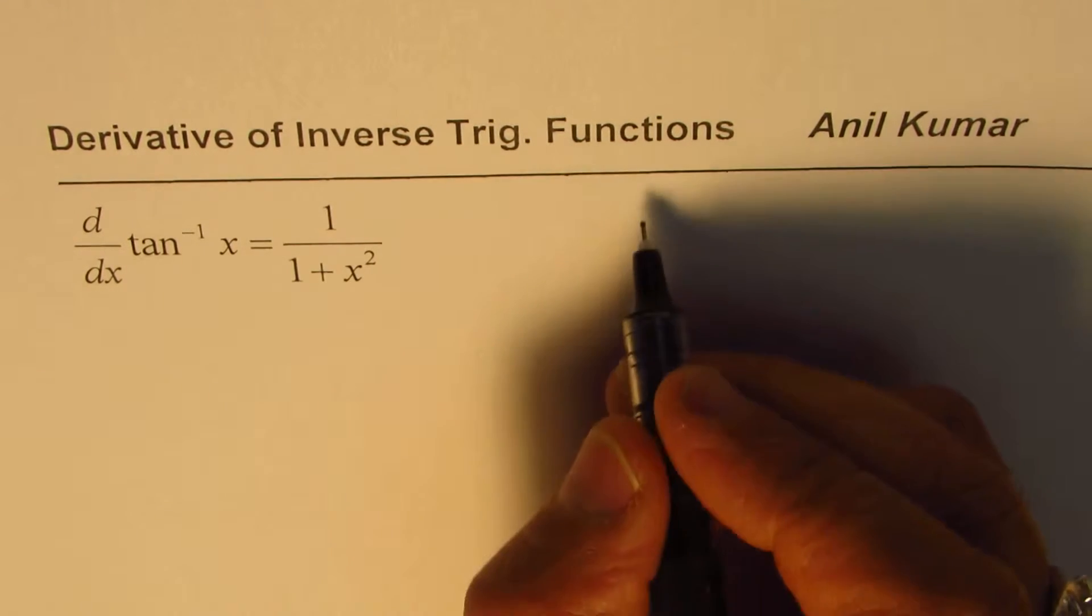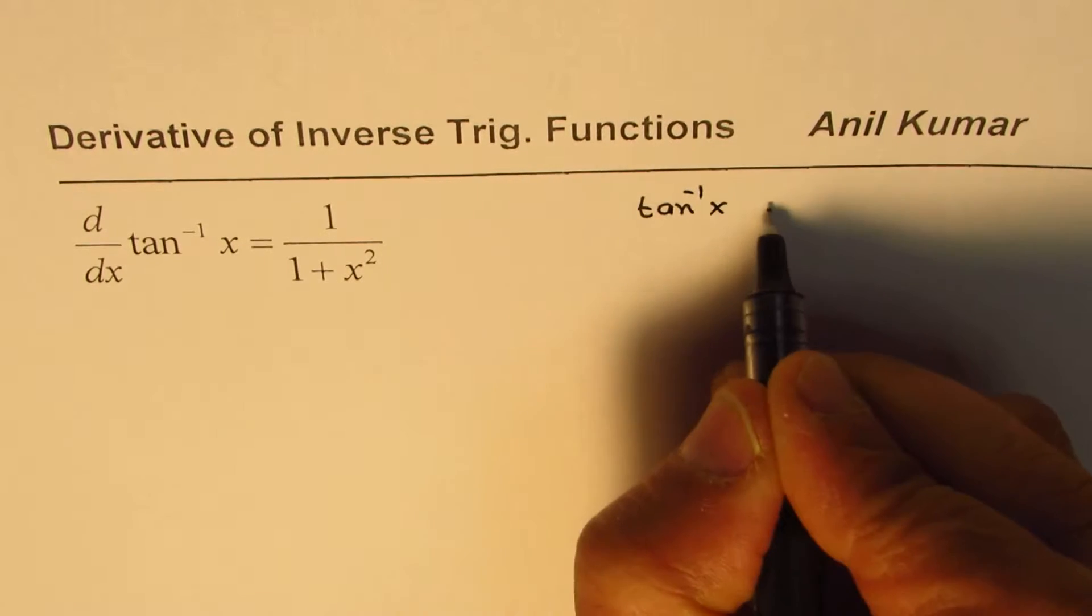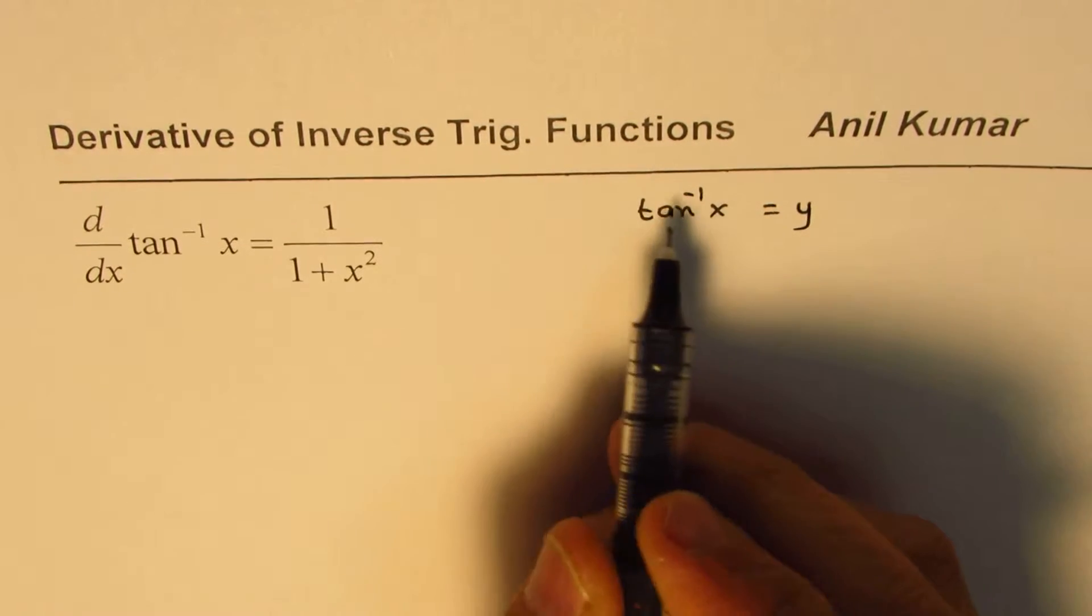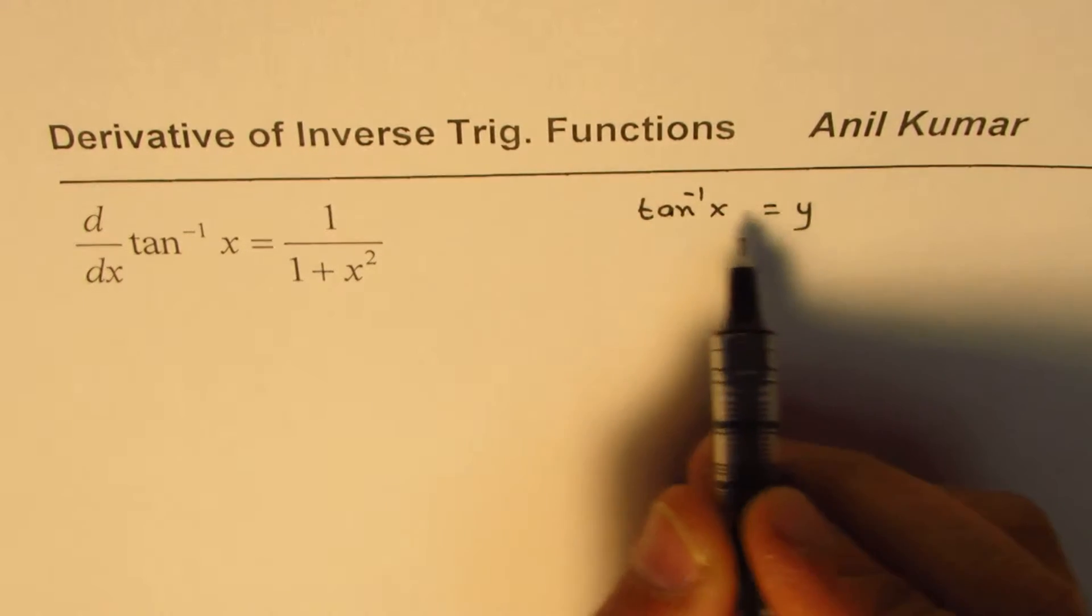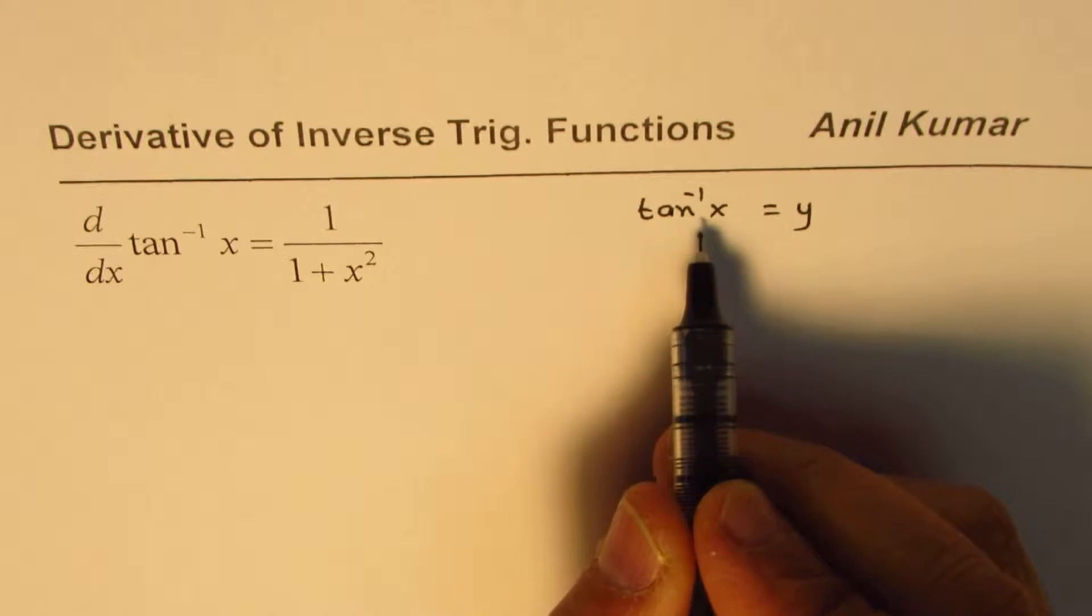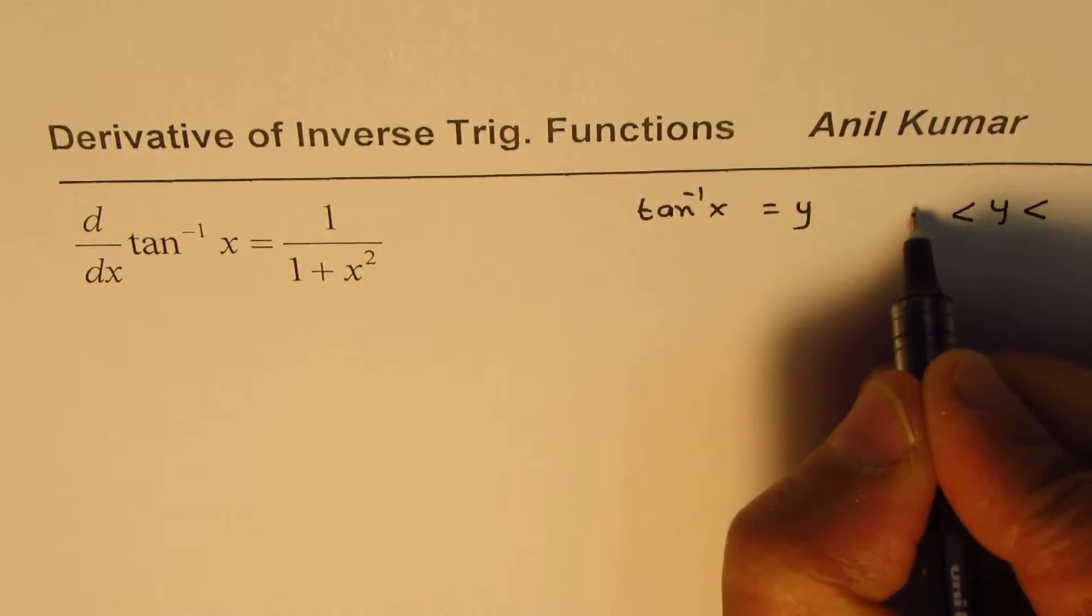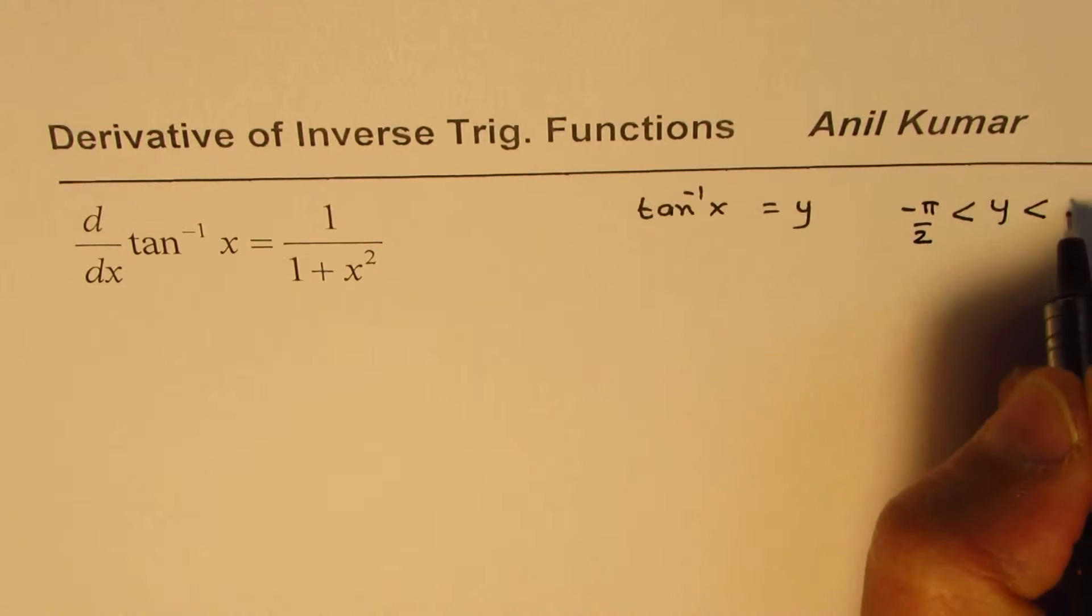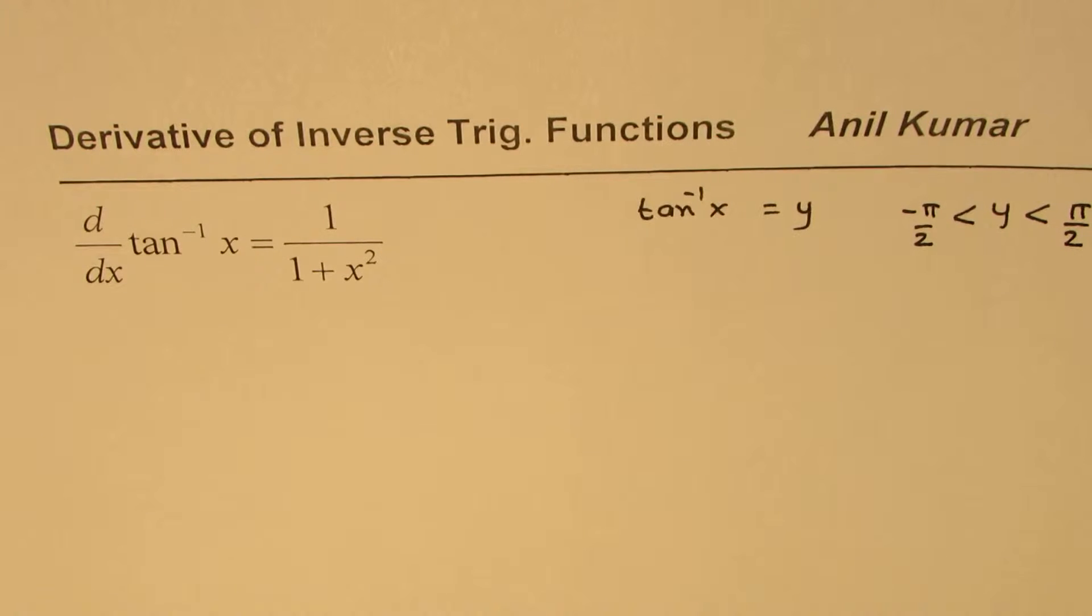Let us write tan inverse x equals y. Now, the inverse function gives you the angle in radians. For tan inverse to be defined, y should be between minus pi by 2 and pi by 2. That is where tan inverse is defined.